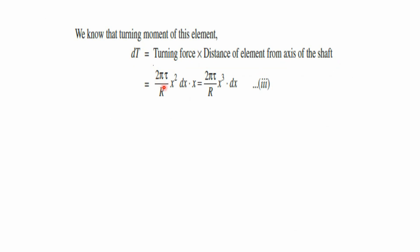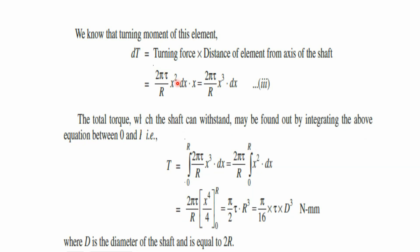The turning force is 2π·tau/R × x²·dx and the distance from the center is x, so the turning moment is 2π·tau/R × x³·dx. To find total torque the shaft can withstand, integrate from 0 to R: T = ∫₀ᴿ (2π·tau/R)·x³·dx = (2π·tau/R) × [x⁴/4]₀ᴿ. Substituting the limits gives (2π·tau/R) × R⁴/4, which simplifies to π/2 × tau × R³. Replacing R with d/2, the final equation becomes T = π/16 × tau × d³ N·mm.